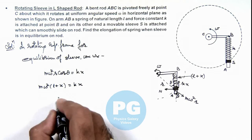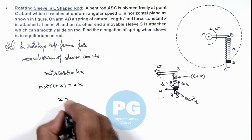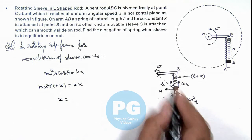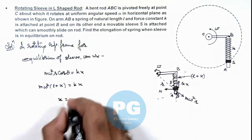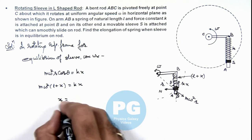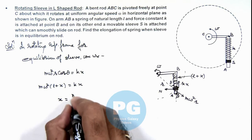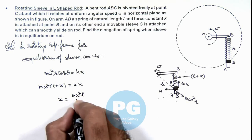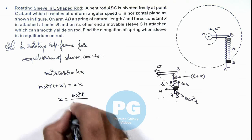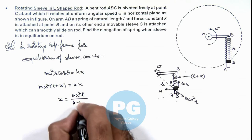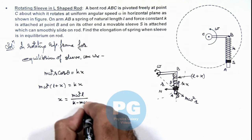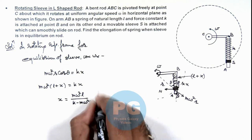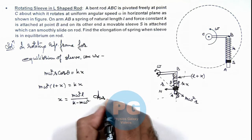Further simplifying, we can directly get the elongation in the spring, that is x, which is given as mω²l divided by (k minus mω²). That will be the final result of this problem.